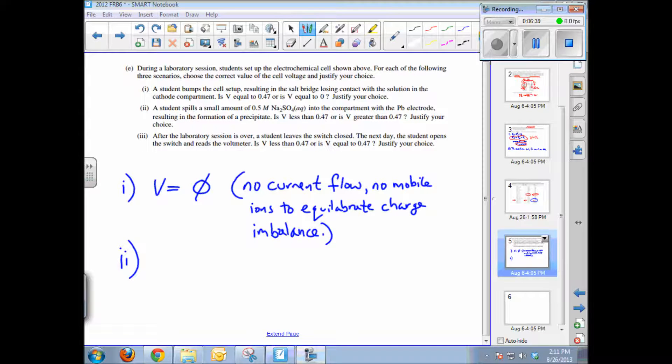The last part of this question imagines three different scenarios and asks what happens to the cell voltage under these scenarios. The first one says a student bumps into the cell setup. Oopsies. And the salt bridge loses contact with the solution. Is the voltage equal to 0.47 or less? Or what happens? Well, the voltage is down to zero. No current can flow without a salt bridge.